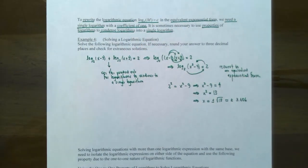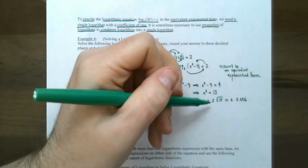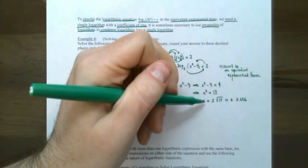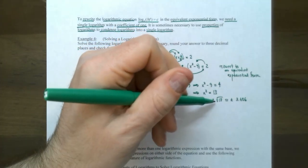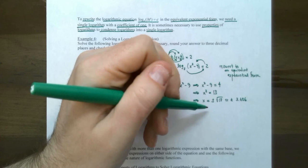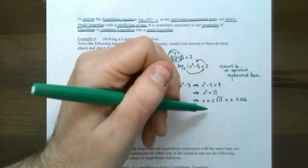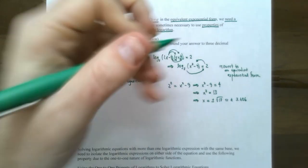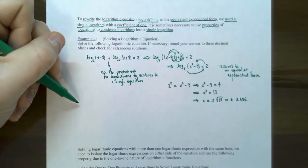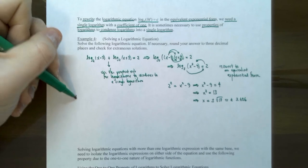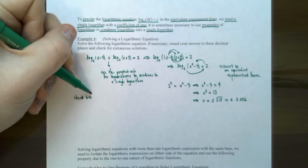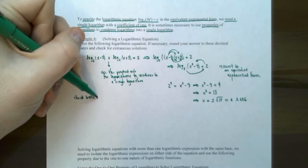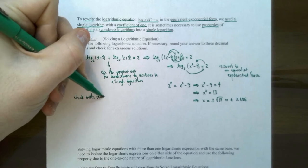So this means we have two solutions: x equals square root of 13 and x equals negative square root of 13. But we haven't checked both answers with the original equation, so that's the last step — check both solutions with the original equation.